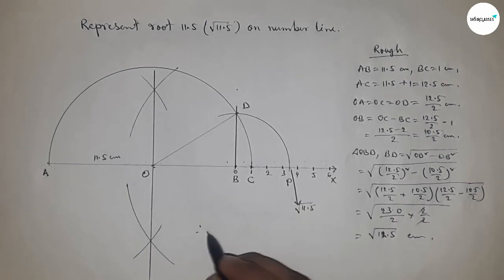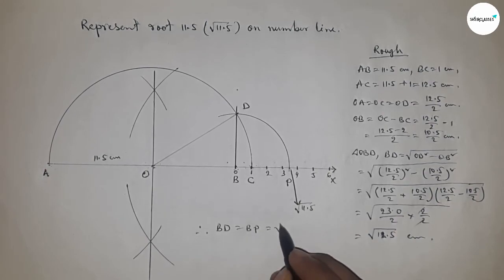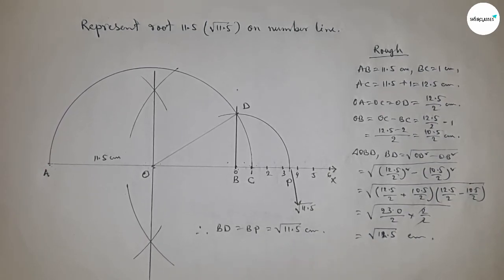Therefore, distances BD and BP are equal to root 11.5 centimeters. That's all. Thanks for watching. Please subscribe, like, and comment on my video. Thanks for watching.